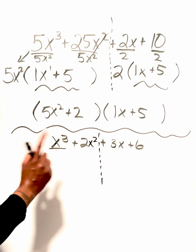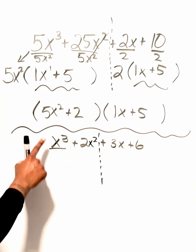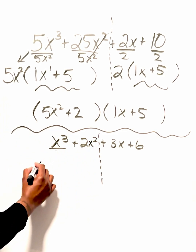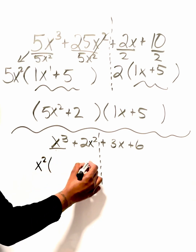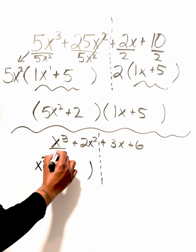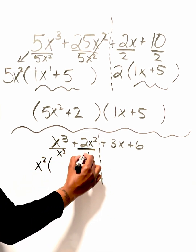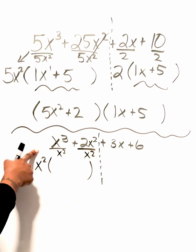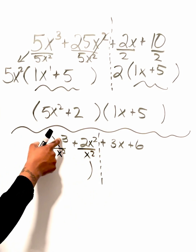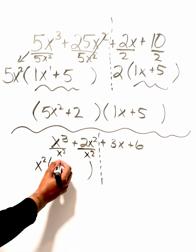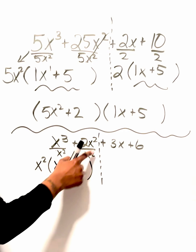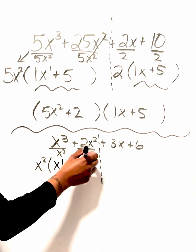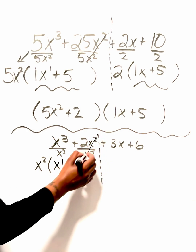Looking at our exponents, we have x cubed and x squared, so I can factor out x squared. Dividing by x squared: x cubed divided by x squared — subtracting exponents, 3 minus 2 gives us x to the first. x squared divided by x squared: 2 minus 2 gives us 0, so those cancel out. Bring down the plus 2.